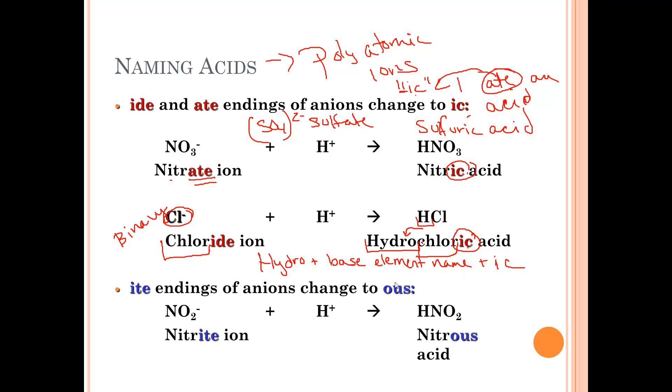-Ite becomes -ous. So instead of nitrite, it's now nitrous. Notice, all of these only have a minus one charge. That means you only need one hydrogen to balance it out. Sulfate up here that I gave you as another example would be H2SO4 because it has a negative 2 charge instead.